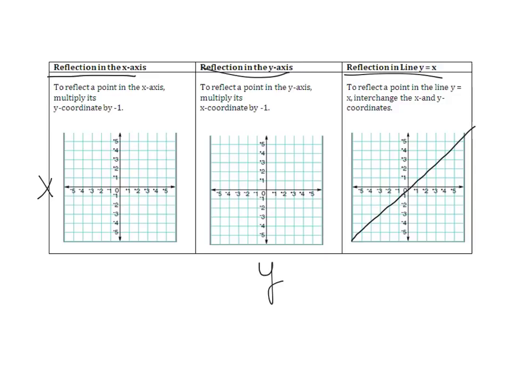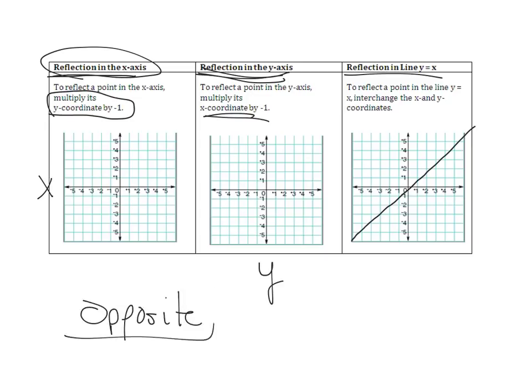Reflection in the x-axis multiplied the y-coordinate by negative 1. Reflection in the y-axis multiplied the x-coordinate by negative 1. So, it ends up being the opposite of what you would think.